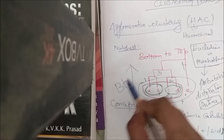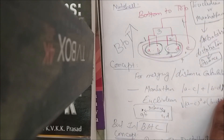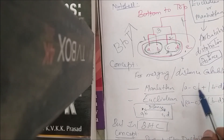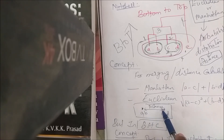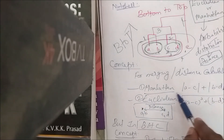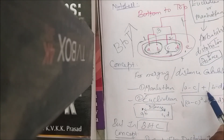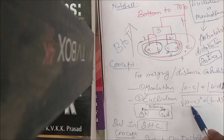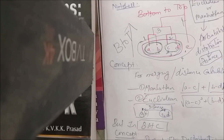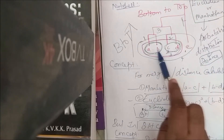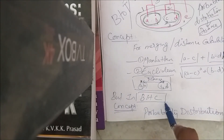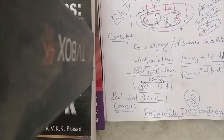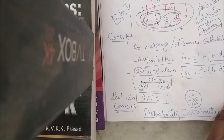In agglomerative clustering, we used Manhattan and Euclidean formulas. For two points (a, b) and (c, d), Manhattan distance is the absolute value of (a−c) plus the absolute value of (b−d). Euclidean distance is the square root of the sum of squared differences. These formulas calculate distance between clusters for grouping. In BHC, however, the concept used is probability distribution — that is the important point differentiating hierarchical agglomerative clustering from BHC.